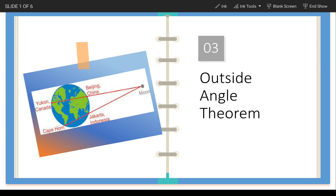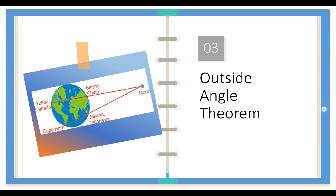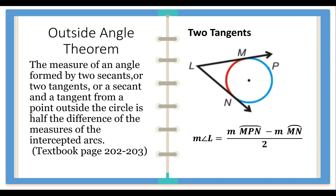Good day everyone. Our concentration will be on the proof of the outside angle theorem involving two secants or two tangents and angles of a circle. The theorem states that the measure of an angle formed by two secants, two tangents, or a secant and a tangent from a point outside the circle is half the difference of the measures of the intercepted arcs.